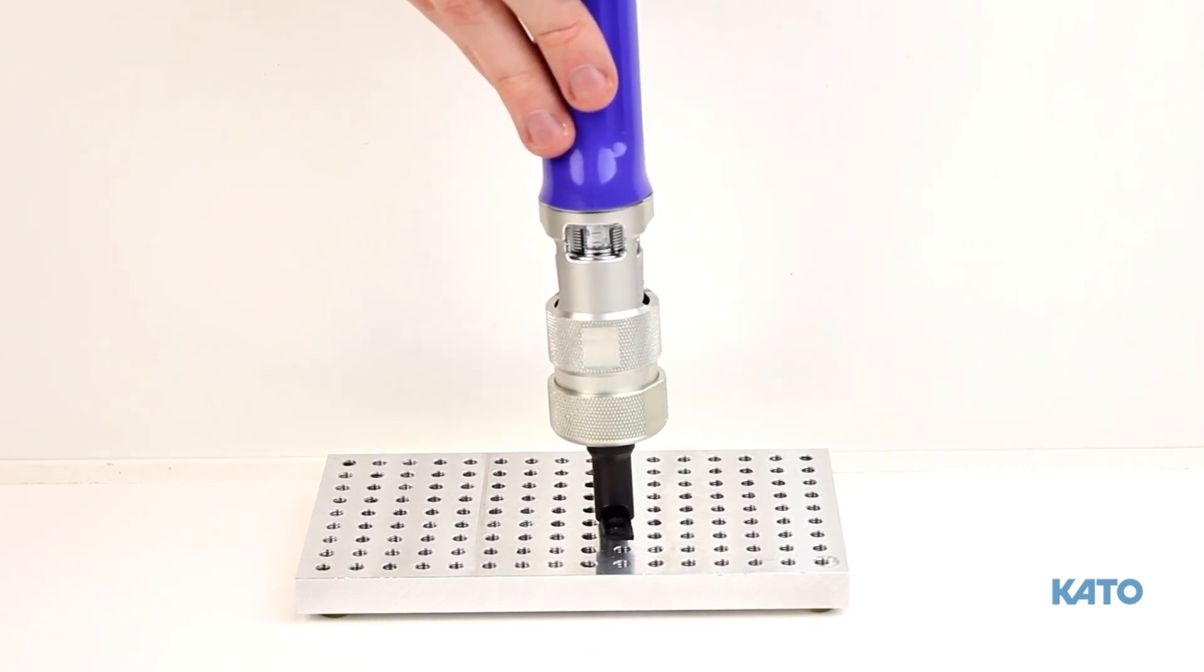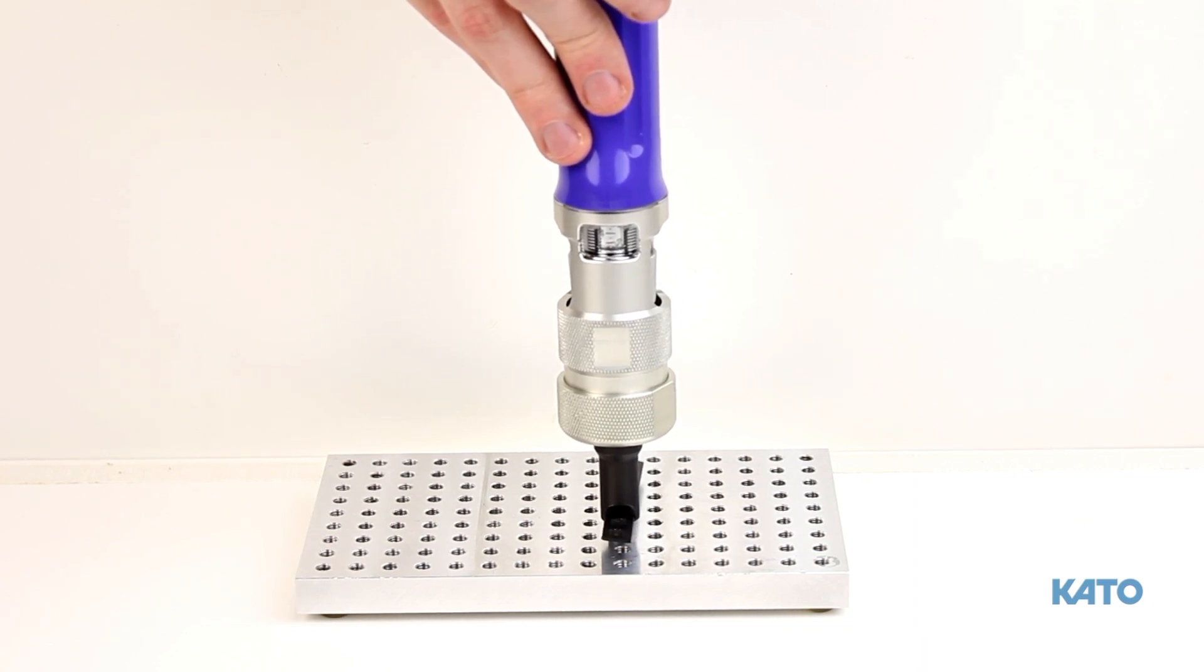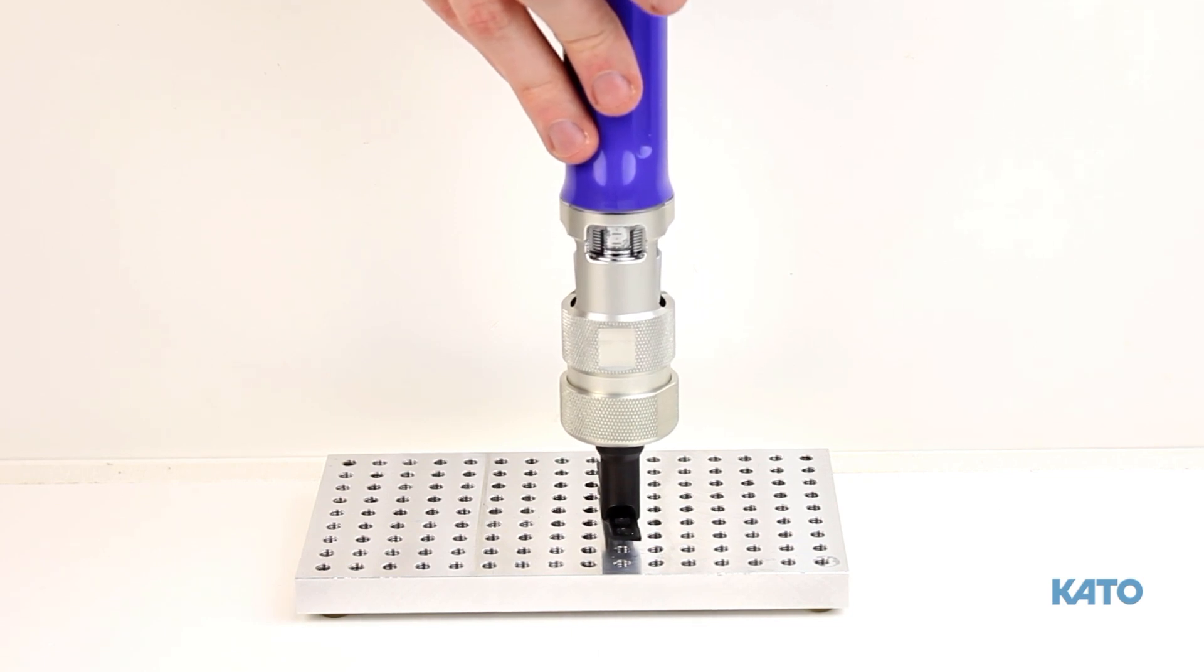Always use the minimum amount of torque that will install the insert. Begin with a very low torque setting. This will cause the driver to automatically reverse before the insert fully installs. Press the trigger to activate the electric driver. Note the insert started to enter the hole, but the driver reversed automatically because the torque wasn't enough.